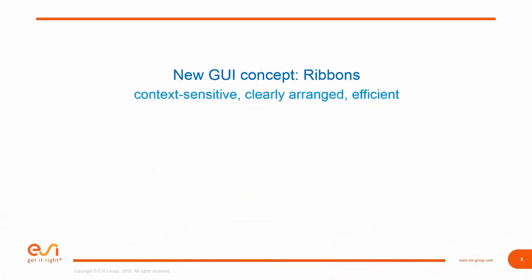The first topic today is the new graphical user interface. We came up with a completely new concept: the ribbon concept. The ribbon concept provides better context sensitivity and accelerates your workflow through a clearly arranged interface and efficient menus and mouse paths. The graphical user interface is, besides the libraries and solvers, the heart of SimulationX. A good user interface is clearly structured, which makes it easier to get started and enables efficient work with just a few mouse clicks.